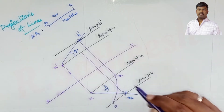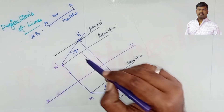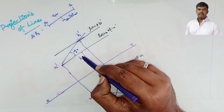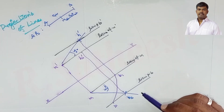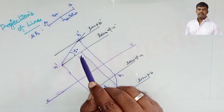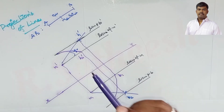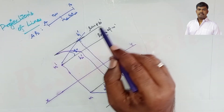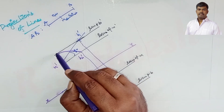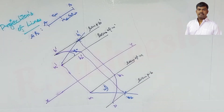From b2, draw a vertical line up to the locus of m-dash — this gives b2-dash (front view). With m-dash as center and m-dash to b2-dash as radius, draw an arc. Where this arc intersects the locus of b-dash gives the point b-dash.